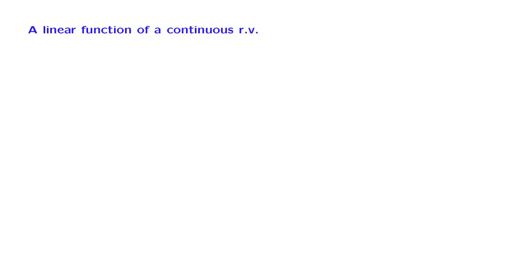We now move to the case of continuous random variables. We will start with a special case where we want to find the PDF of a linear function of a continuous random variable. We will start by considering a simple example and study it using an intuitive argument, and afterwards we will justify our conclusions mathematically.